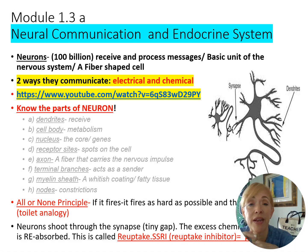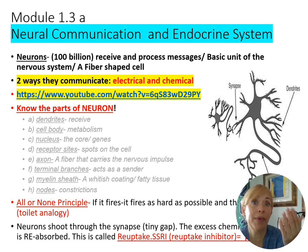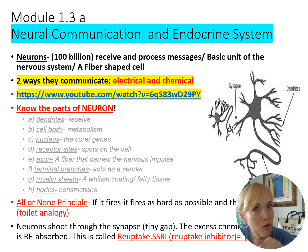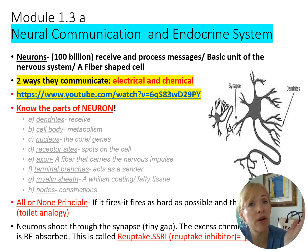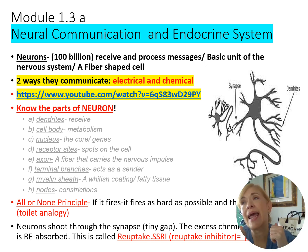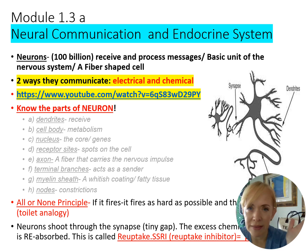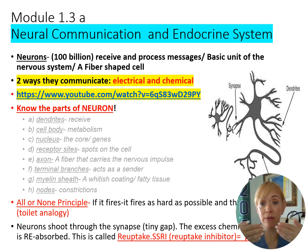You need to know the structure and functions of the neuron parts — dendrite, cell body, axon, terminal, myelin sheath, nodes of Ranvier. Also know the all-or-none principle: when a neuron fires, it fires as hard as it can; if it doesn't reach threshold, it doesn't fire. And remember the reuptake mechanism — two neurons communicate when one releases a neurotransmitter into the synapse.